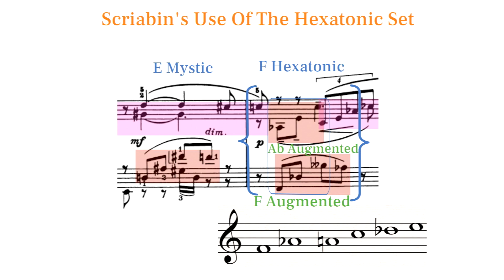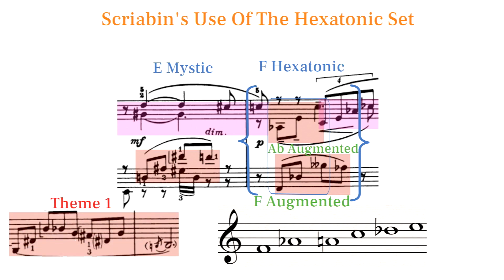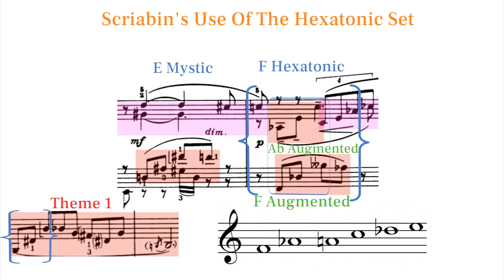It's such an effective use of the set because the minor 6th leaps come from the established theme 1 motif, and by doubling the motif a minor 3rd away we get the same expected motif reharmonized to a strange set that fits with the enigmatic sound of the rest of the piece.